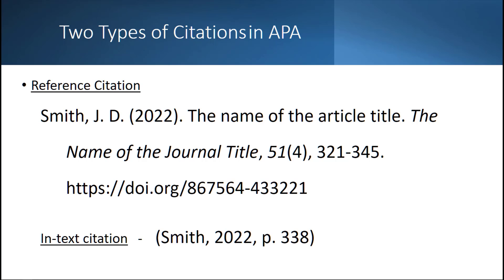The second type of citation is an in-text citation. This is used inside your paper to indicate that you are giving credit to the author where you got the information, idea, or direct quote. In this case we have Smith inside parentheses, comma, 2022 as the year of publication, and page — p. 338 — then close the parentheses. In many cases the period to end the sentence will go outside the parentheses after the page number.